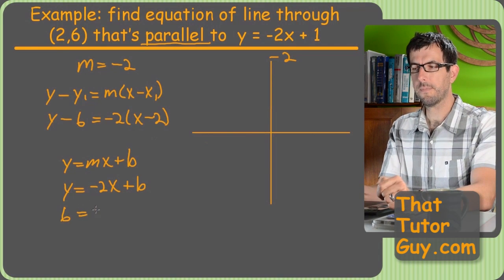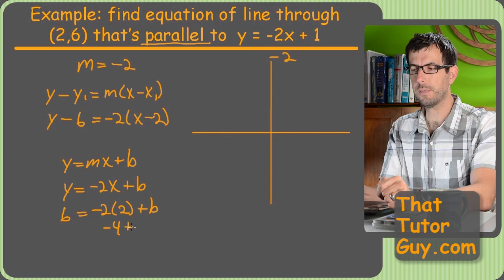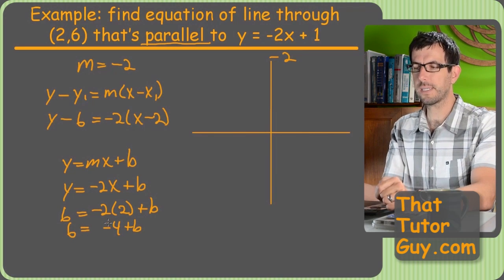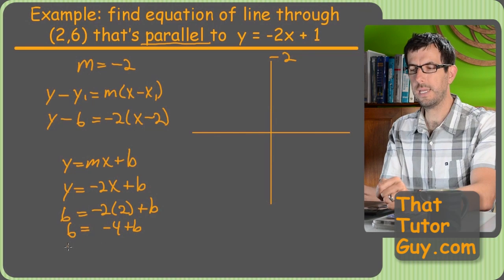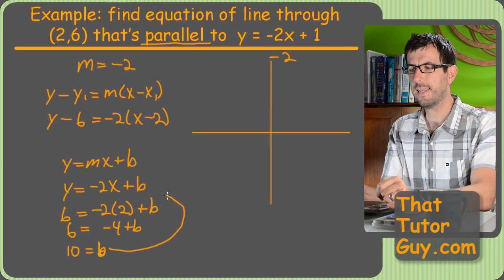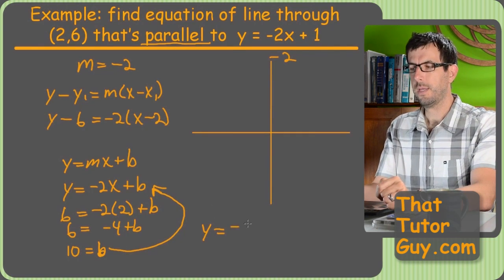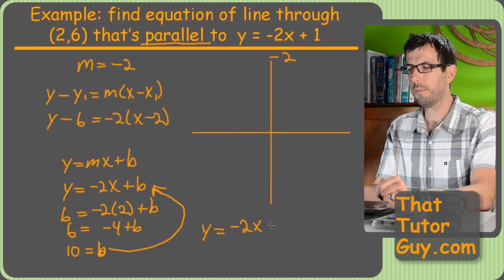So, we're going to plug in two comma six. So, we'll get six equals negative two times x, which is two, plus b. So, this is negative four plus b equals six. And hopefully you can tell my b's apart from my sixes. Add four to both sides and we get 10 equals b. So, now I'm going to take this and plug it into here. So, we get y equals negative two x plus 10.